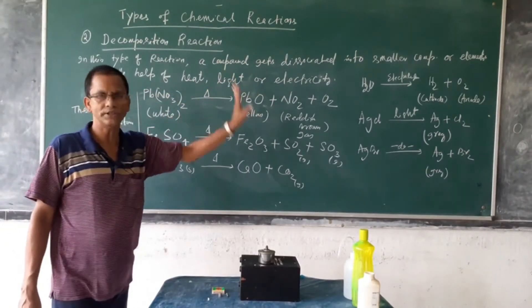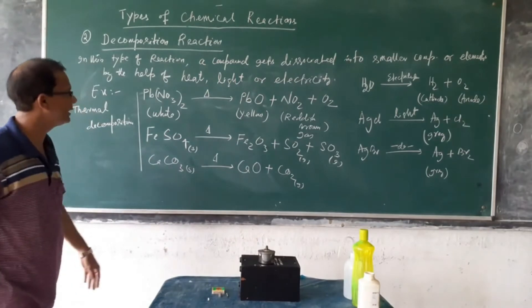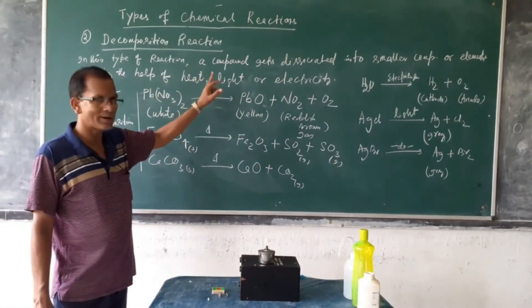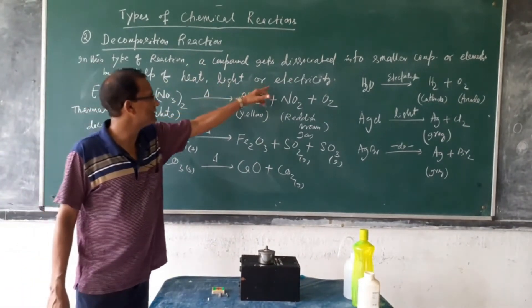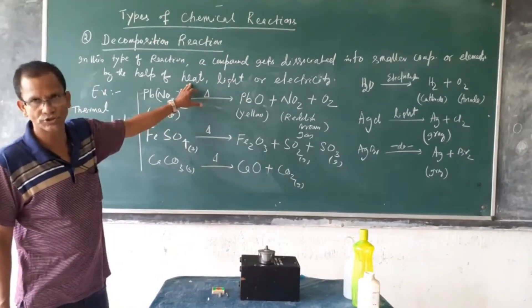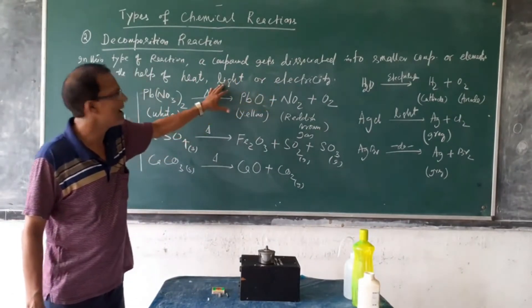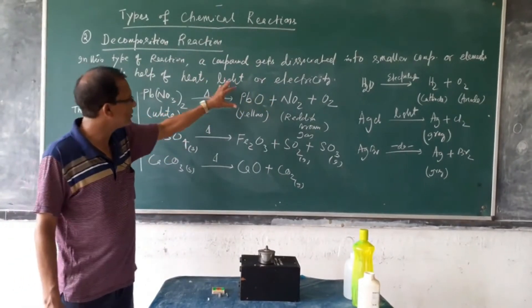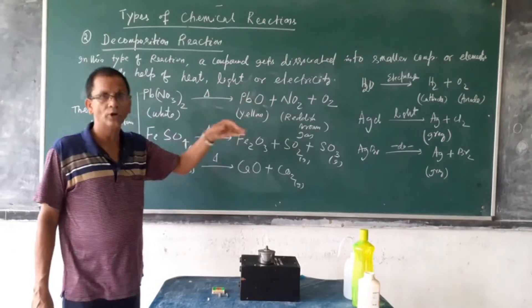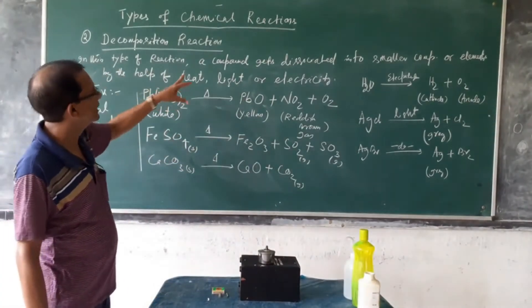Light or electricity. That means by the help of heat or light or electricity, these are the energy sources. That is thermal energy, electrical energy and light energy. This energy helps to decompose a compound.